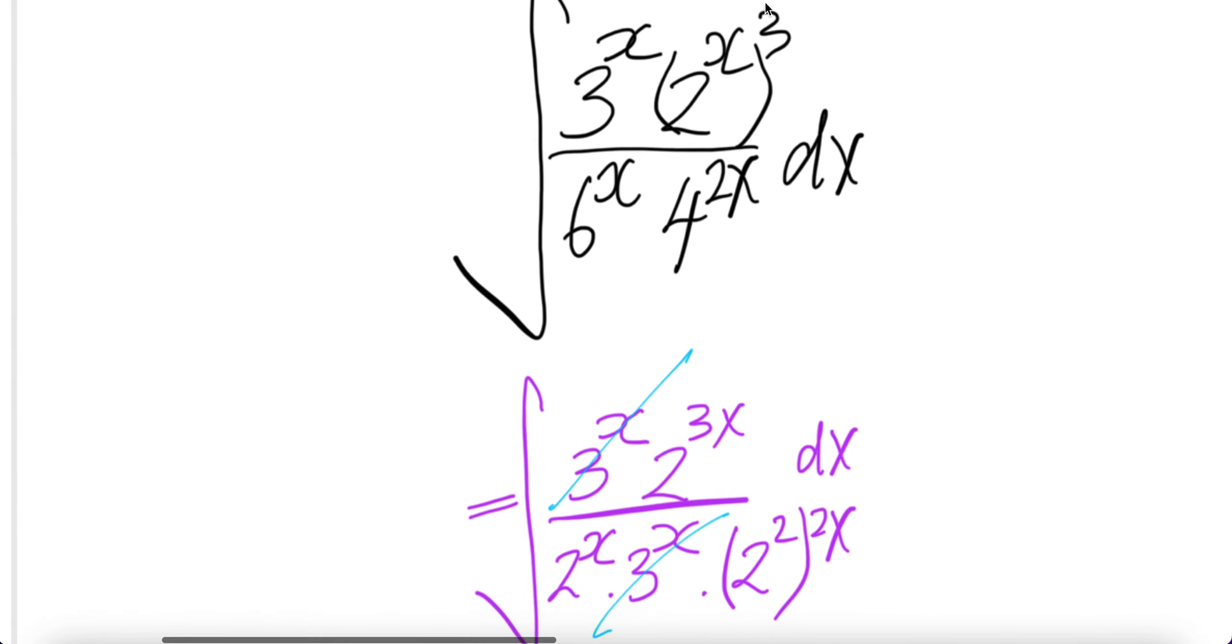Now, let us express this as 2 to the power of 3 times x is 3x, and then write this as 2 to the power of 2 times - no, 2 to the power of 2 to the power of 2x, and this as 2 times 3 to the power of x, which is 2 to the power x times 3 to the power x.